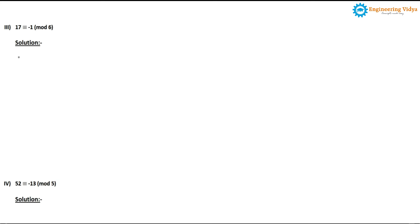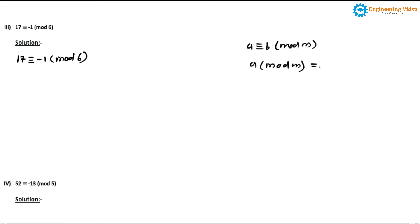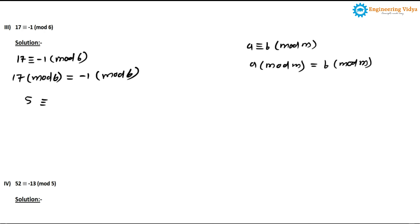In problem 3, we prove 17 ≡ -1 (mod 6). Writing it as: 17 mod 6 = (-1) mod 6. Calculating 17 mod 6: 6 goes 2 times giving 12, remainder is 5, so the left-hand side is 5. For (-1) mod 6: applying the negative modulus rule, 6 - 1 = 5. So 5 = 5, LHS equals RHS, and the statement 17 ≡ -1 (mod 6) is proved.